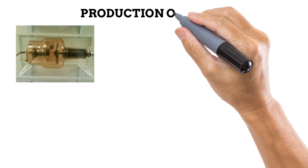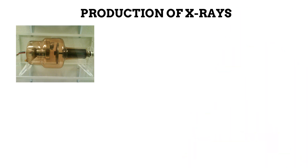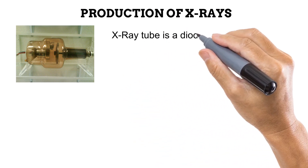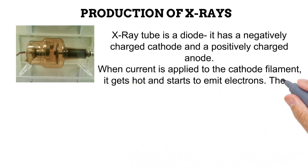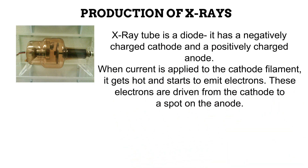How are these X-ray photons produced? In the next video, we learn about the various components of an X-ray tube and their different functions. For now, let us take note of two important components. The X-ray tube is a diode. This means that it has a negatively charged cathode and a positively charged anode. When current is applied to the filament of the cathode, the filament gets hot and starts to release electrons.